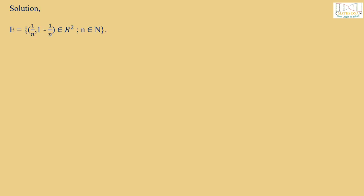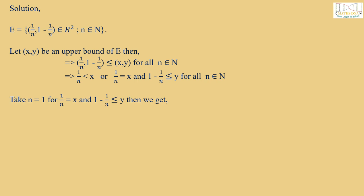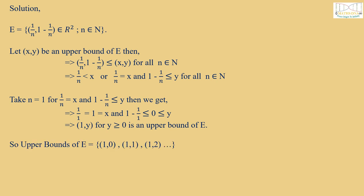Solution. Given E = {(1/n, 1−1/n) ∈ ℝ² : n ∈ ℕ}. We first find the upper bound. Let (x,y) be an upper bound of E. Then (1/n, 1−1/n) ≤ (x,y) for all n ∈ ℕ, which implies 1/n < x, or 1/n = x and 1−1/n ≤ y for all n ∈ ℕ. Taking n = 1 for the case 1/n = x, we get x = 1 and 0 ≤ y. So (1, y) for y ≥ 0 is an upper bound of E. The upper bounds of E are (1,0), (1,1), (1,2), and so on. Therefore, the Supremum, which is the least upper bound, equals (1,0).